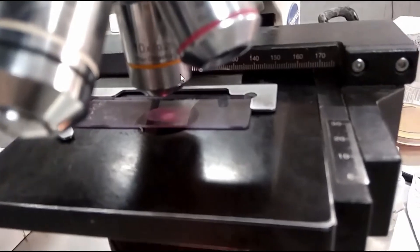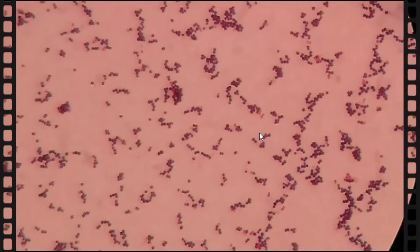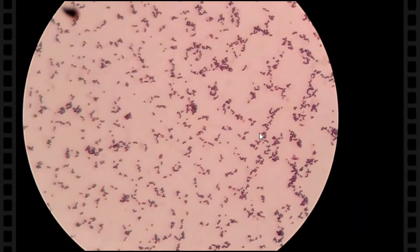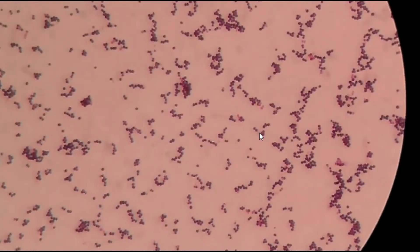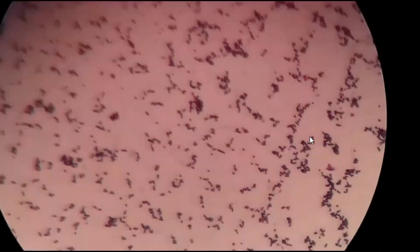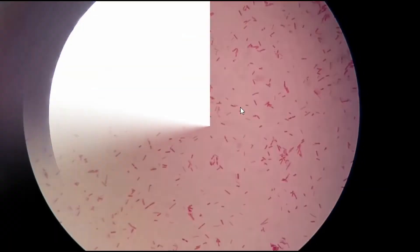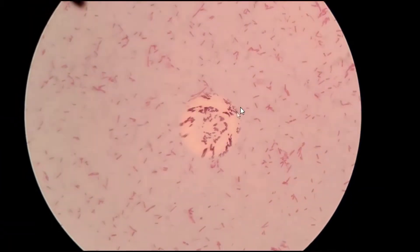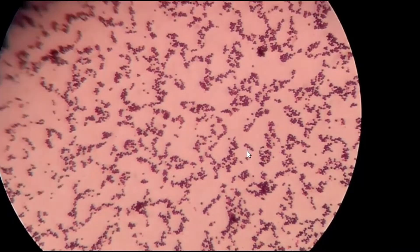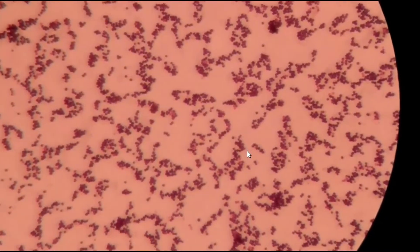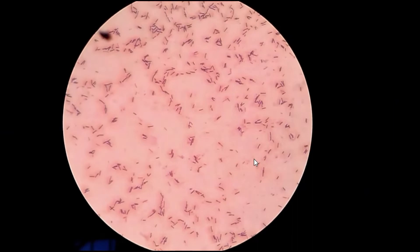First under low power that is 10x objective and then under oil immersion 100x objective. Now about observation. As you know, gram stain positive appears purple or violet in color, whereas negative appears pink or red in color. Spherical shape is called cocci, whereas rod shape is called bacilli.